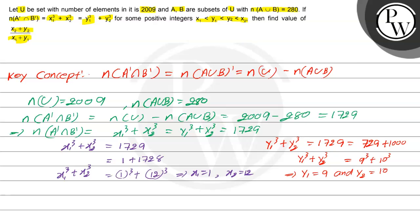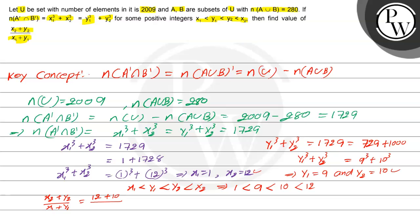Now we had the condition x1 < y1 < y2 < x2. With x1 = 1, y1 = 9, y2 = 10, x2 = 12, we get 1 < 9 < 10 < 12 — all conditions satisfied. So (x2 + y2) / (x1 + y1) = (12 + 10) / (1 + 9) = 22/10 = 11/5. So our final answer is 11/5. I hope you understood it well. Best of luck, thank you.